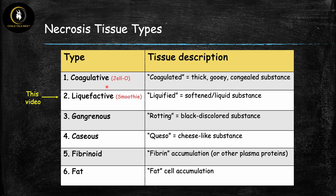Coagulative and liquefactive necrosis are the two most common necrotic tissue types, and exam questions really like you to be able to tell the difference between them — so make sure you're focusing on knowing that distinction. For each type of necrosis there are unique diseases that cause it, specific pathophysiology, and characteristic tissue appearance, so pay attention to those details as you study each type.